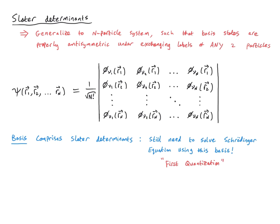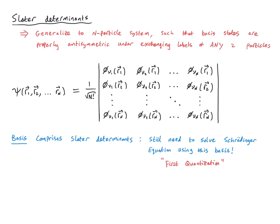This whole formalism is what's known as first quantization, in counterpoint to second quantization, which will be the main topic of this lecture. But first, let me try to explain why there's a need for an alternative formulation for quantum many-body systems involving fermions. Probably the most significant and severe problem with first quantization is that performing actual calculations can be very cumbersome and computationally expensive. It just takes a huge amount of effort to compute anything when the system size is large. For example, if we consider calculating some matrix element of an arbitrary operator, this actually requires us to form n factorial squared different products of the objects appearing in these Slater determinants.